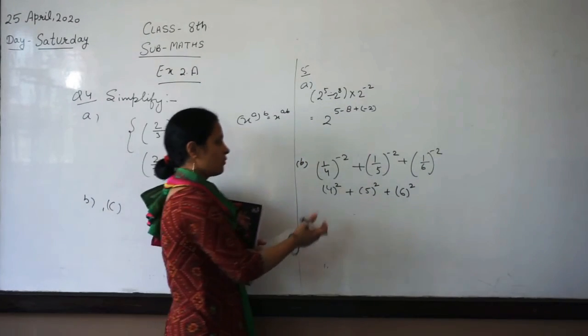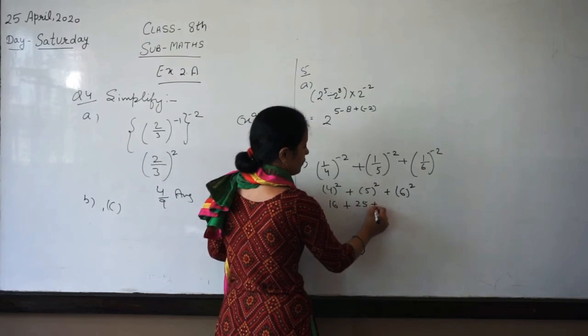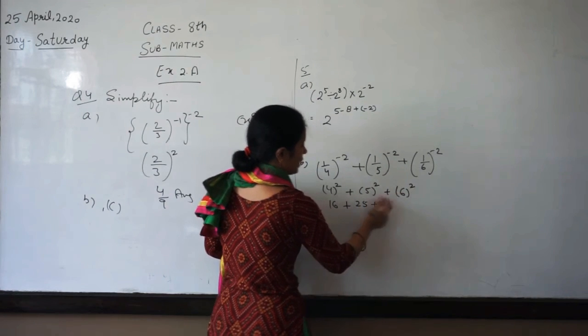Now, 4 to the power 2 is 16, plus 5 to the power 2 is 25, plus 6 to the power 2 is 36.